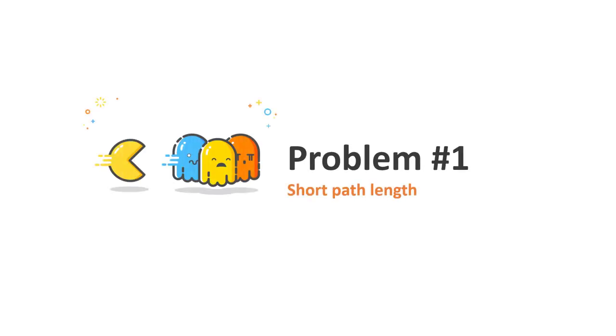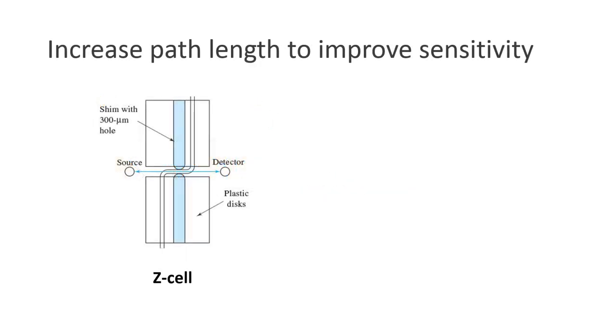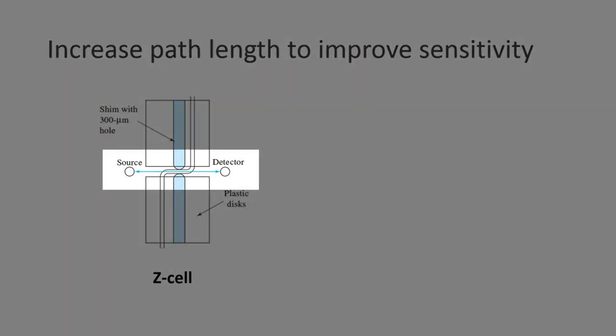So, the first problem we face here is a short path length. To improve the sensitivity of the detection, one common approach is to bend the end of the capillary into a Z shape to produce a path length as long as 10 times the capillary diameter.